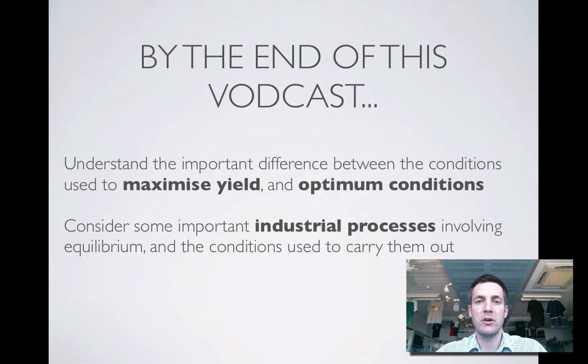Really, it looks at the difference between maximizing yield, producing as much product as we can, and optimizing the conditions, in other words setting them up in such a way so that we can make as much money from the chemicals we're producing as possible. And we're going to do this by looking at a couple of different industrial processes.